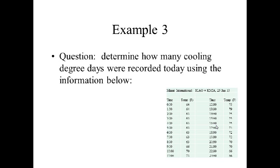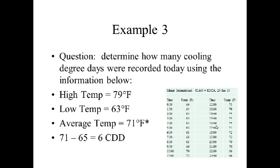Example three: the 24-hour temperature trend for Miami Airport, Florida, from January 25th, 2013. The high temperature was 79 degrees and the low was 63, giving an average of 71 degrees Fahrenheit — 79 plus 63 divided by 2. Since 71 is greater than 65, we subtract 65 from 71 and determine we have 6 cooling degree days. The actual average temperature in Miami, computed by averaging all 24 values, is 69 degrees Fahrenheit, giving 4 cooling degree days. Again, on a single day it's not statistically significant, but that two degree-day difference can add up to a significant value over the course of a year.